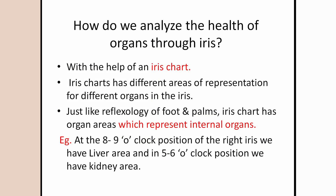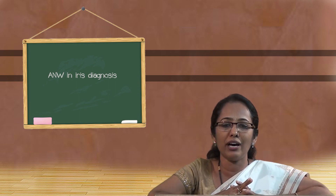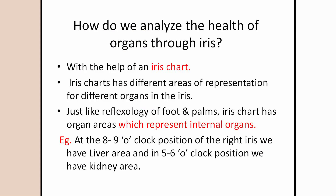Now, how do we analyze the health of an organ through the iris? We do this with the help of an iris chart. The iris chart was developed by Bernard Jensen — many people have developed different types of iris charts, but the one used today is the one developed by Dr. Bernard Jensen. The chart has different areas of representation, just like a reflexology chart for palms and feet. Our organs are also represented in the iris, and every portion of the chart is related to a specific internal organ.